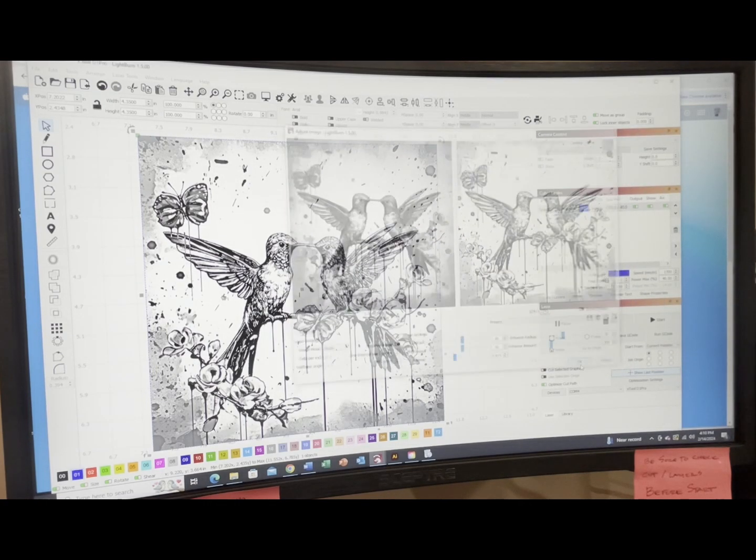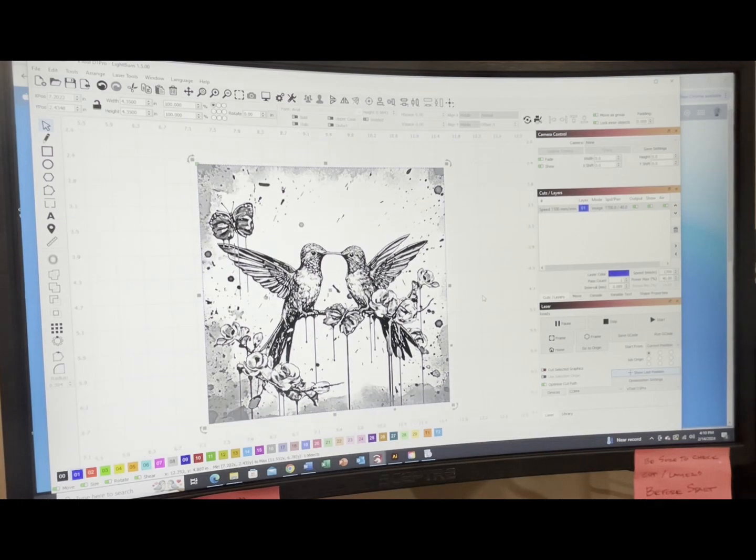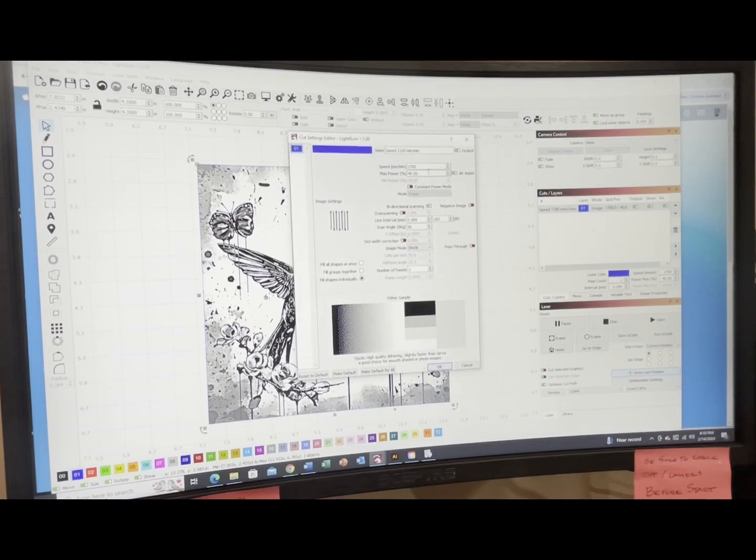Now my power - because I've got titanium dioxide on here, I can be a little more loose with my controls. So these are the settings that I use: I use speed 1700 millimeters a minute at 40% power, I do 285 DPI, and my scan angle I changed to 90. I've just had good luck with that so I'm going to continue doing that.